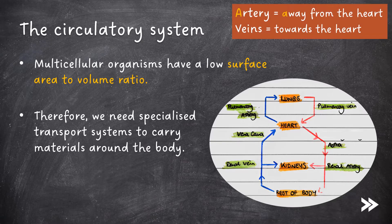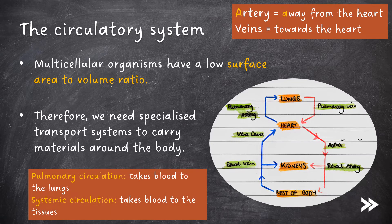Arteries carry blood away from the heart. I like to remember it in the way that the word artery starts with the letter A, which stands for away. Anything that transports blood away from the heart is an artery. This rule also applies to the renal artery and the pulmonary artery, both of which carry blood away from the heart. There are two main types of circulation: pulmonary and systemic. Pulmonary circulation transports blood to the lungs, and systemic circulation transports blood to the tissues.